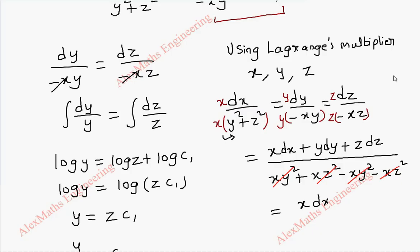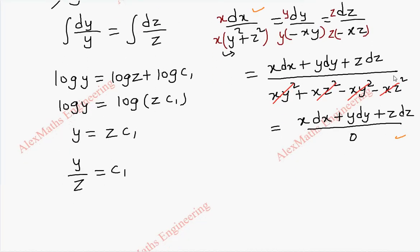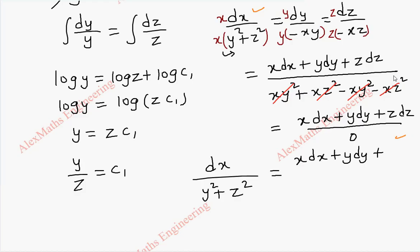So x dx plus y dy plus z dz divided by zero. Now as usual, we take the first term and this last term together. That is, leaving the multiplier, take dx by y square plus z square equal to x dx plus y dy plus z dz all over zero. Now when we cross with the line, this entire term will be multiplied with zero, so the other side is completely zero.